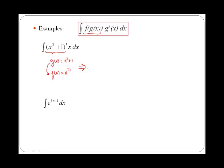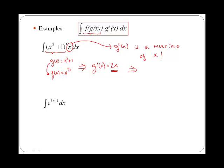The only thing left to check is whether substitution is the right technique to apply: who is the derivative of g, and do we have the derivative of g inside the integral? In this case the derivative of g is just 2x. If you have a look inside the integral, we have an x, and if you realize, the derivative of g is a multiple of that x — because if you multiply x by 2, you get 2x. Therefore, you do have the derivative of g inside, and substitution is the right technique to apply.